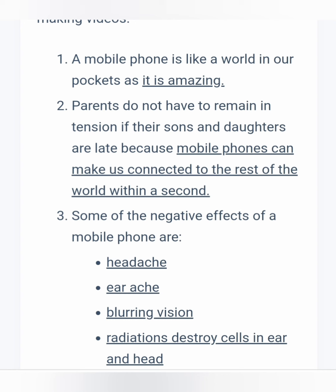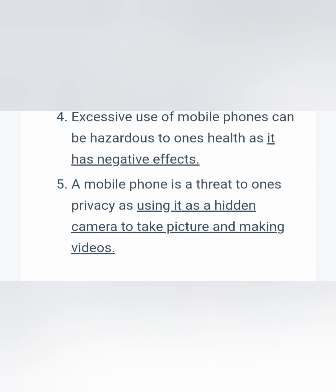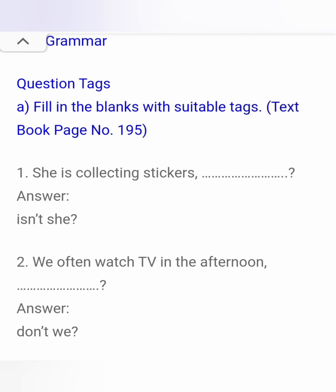Your listening passage is given at the back of your book. It is about mobile phones. A mobile phone is like a world in our pocket — it is amazing. Parents do not have to remain in tension if their sons and daughters are late because mobile phones keep us connected to the rest of the world within a second. Some negative effects of mobile phones are headache, earache, blurring vision, and radiation that destroys cells in the ear. So there are positive as well as negative aspects — handle it carefully, children. A mobile phone is also a threat to privacy as it can be used as a hidden camera to take pictures and make videos.